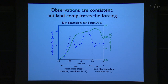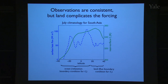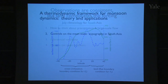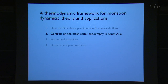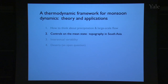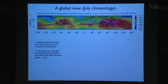Combined, those give us these distributions — consistent with the simple model, where we have an ascending region lying directly over the peak source of energy into the column and a little equatorward of the peak boundary layer θE or energy content. This somewhat esoteric view of tropical circulations can actually be used for some very concrete purposes.